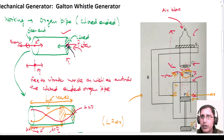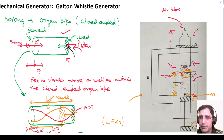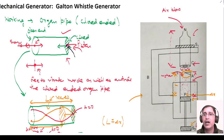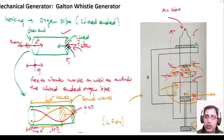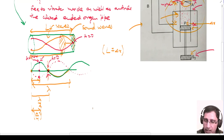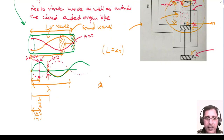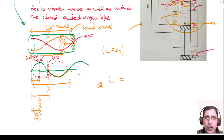When you blow air through the nozzle and the air molecules strike the lip of this closed-ended organ pipe, they vibrate. Sound waves are produced in the lower organ pipe. For the length calculation: L is the length of the closed-ended organ pipe from the piston to the open end. With a correction value delta x, the effective length is L plus delta x, which equals lambda by 4. Therefore: lambda = 4(L + delta x).